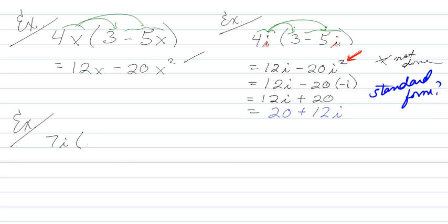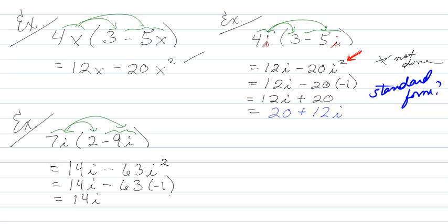So I'll do a couple more examples. Let's do 7i times 2 minus 9i. So I've got my 7i distributes across. So 7i times 2 is 14i, 7i times minus 9i is negative 63i squared. So I keep going. i squared is the same thing as negative 1. So 14i, negative 63 times negative 1 is plus 63. And again, to rewrite it in standard form, I put the real part first and then the imaginary part. And it's really, honest to goodness, as straightforward as that.